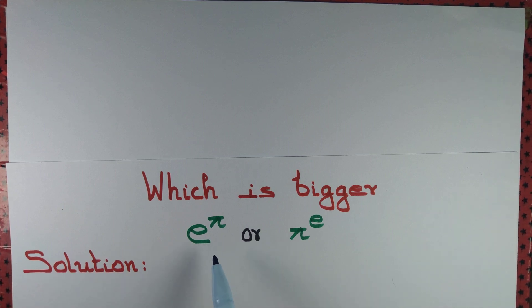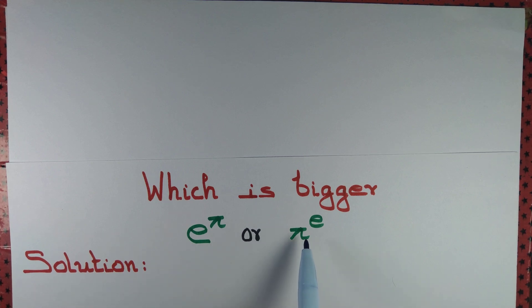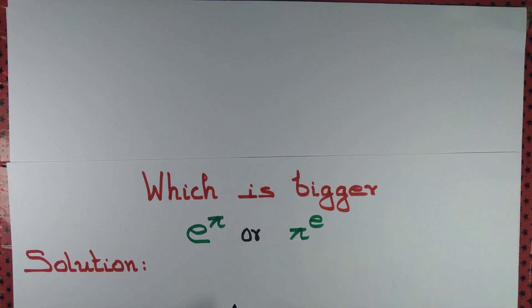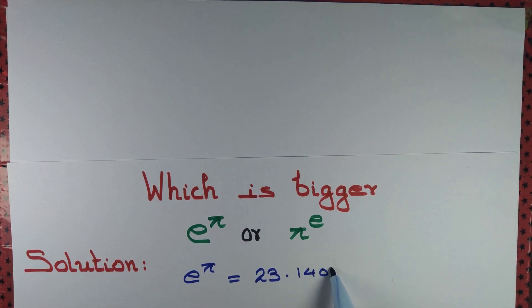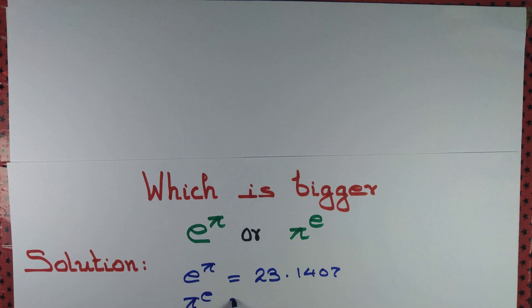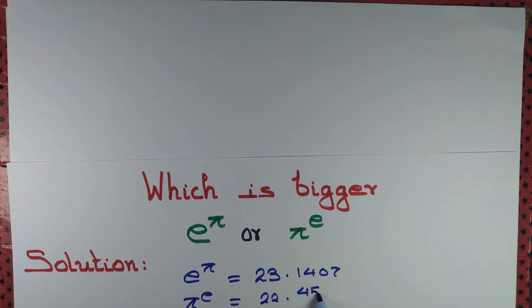Let us try to find out which one is a bigger number: e to the power pi, or pi to the power e. Now, e to the power pi, if we apply a calculator, equals 23.147, whereas pi to the power e equals 22.4591, both approximately.